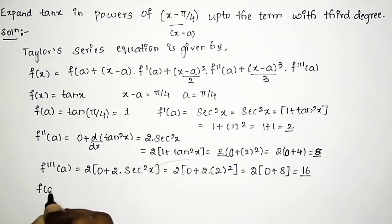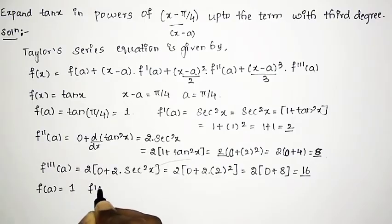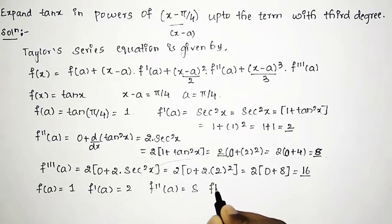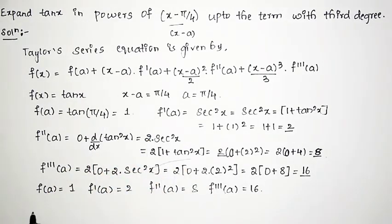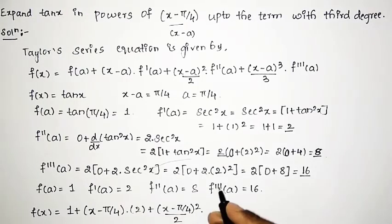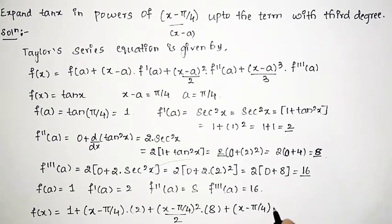So lastly we have obtained: f(a) = 1, f'(a) = 2, f''(a) = 8, and f'''(a) = 16. Now we shall substitute all the values into the Taylor series equation: tan x = f(a) + (x − π/4)·f'(a) + (x − π/4)²/2·f''(a) + (x − π/4)³/3!·f'''(a) = 1 + (x − π/4)·2 + (x − π/4)²/2·8 + (x − π/4)³/6·16.